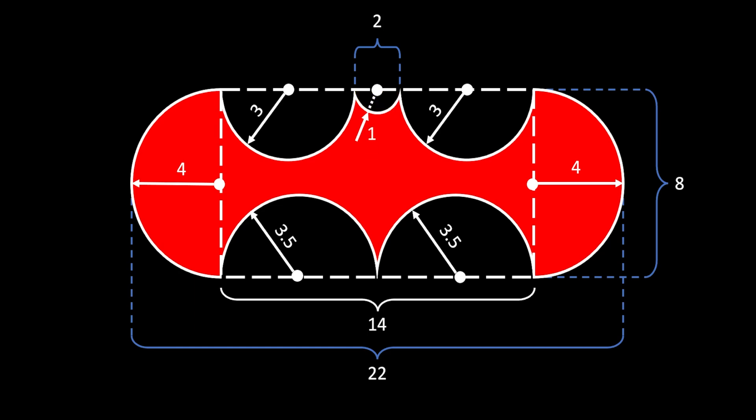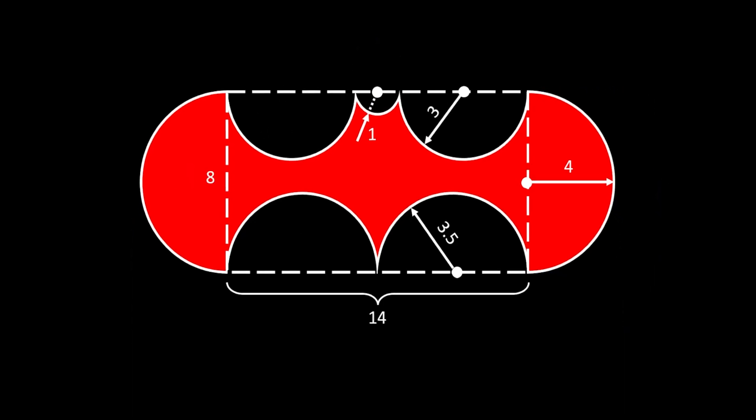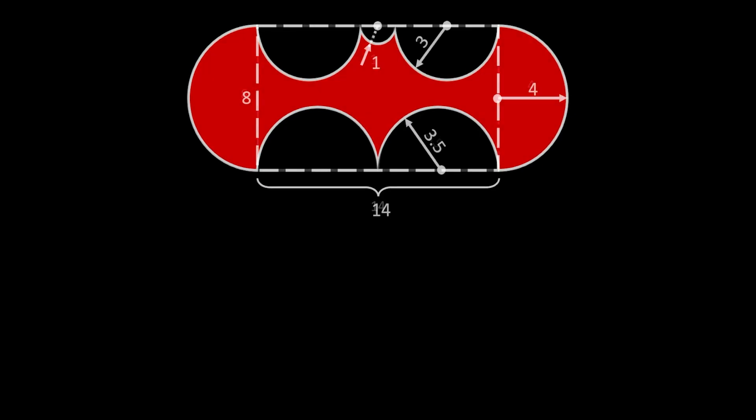We now have all the basic dimensions. Let's clear this up and move on to finding the area. As a bonus homework: if you want to do some math, try calculating the perimeter of this bat wing using the dimensions on screen and write your answer in the comments below.